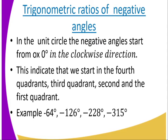Let us go briefly through what I've talked about. In the unit circle, the negative angles start from OX, zero degrees, in the clockwise direction. This indicates that we start in the fourth quadrant, third quadrant, second quadrant, and first quadrant. For example: negative 64 degrees, negative 126 degrees, negative 228 degrees, and negative 315 degrees — that is what we want to represent.